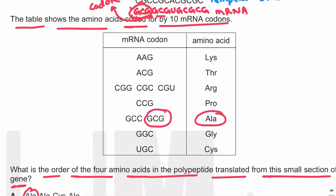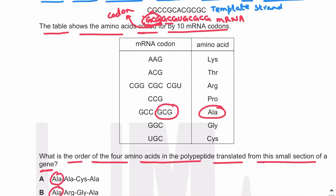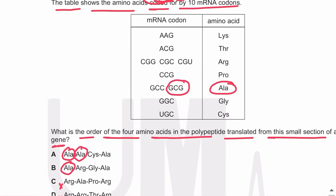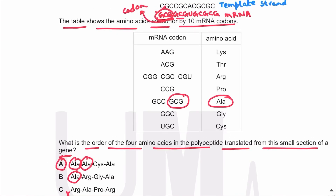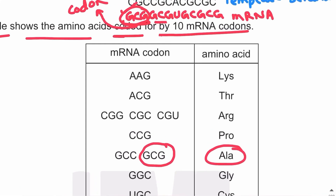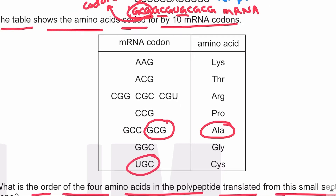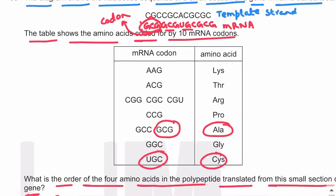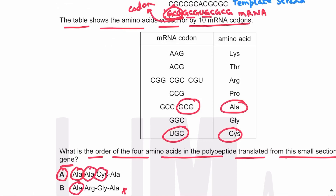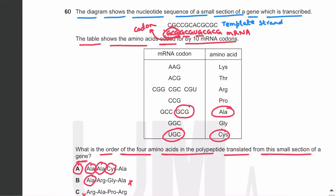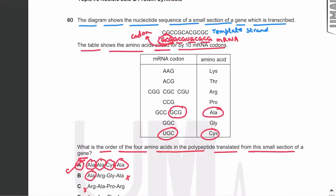The second codon is again GCG, which again codes for Ala, so the answer is A. The third codon is UGC, and UGC codes for cysteine, so the third amino acid is cysteine — which is correct in the right answer. The last codon is GCG again, coding for Ala. The answer is A.